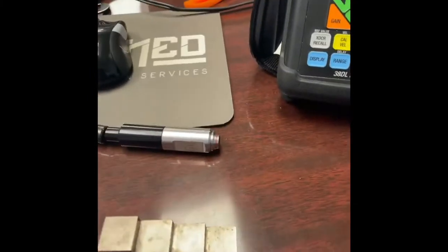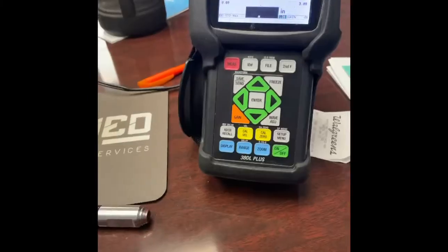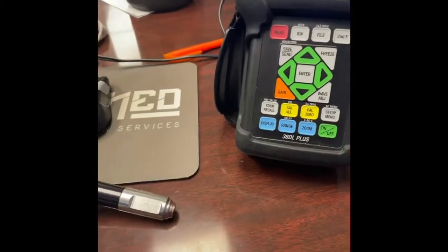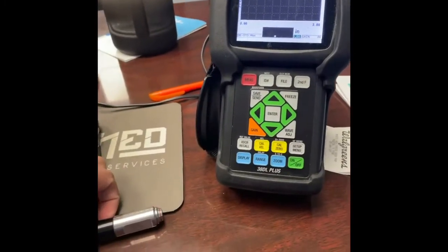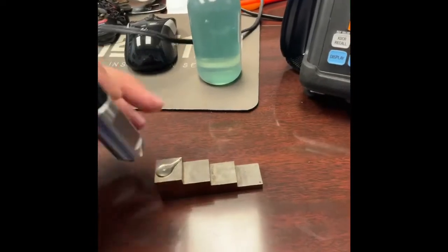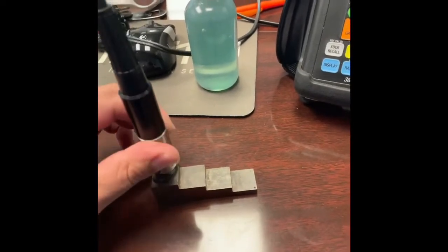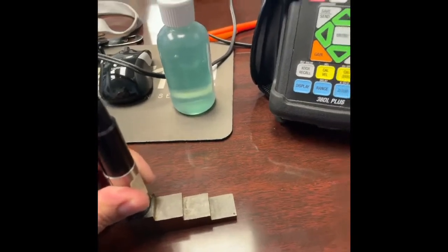So I've always been asked, how is it that you can calibrate a dual element or a 38 using multiple back wall echoes? So let me show you. So what I'm going to do is I'm just going to go ahead and couple my transducer and get my reading.